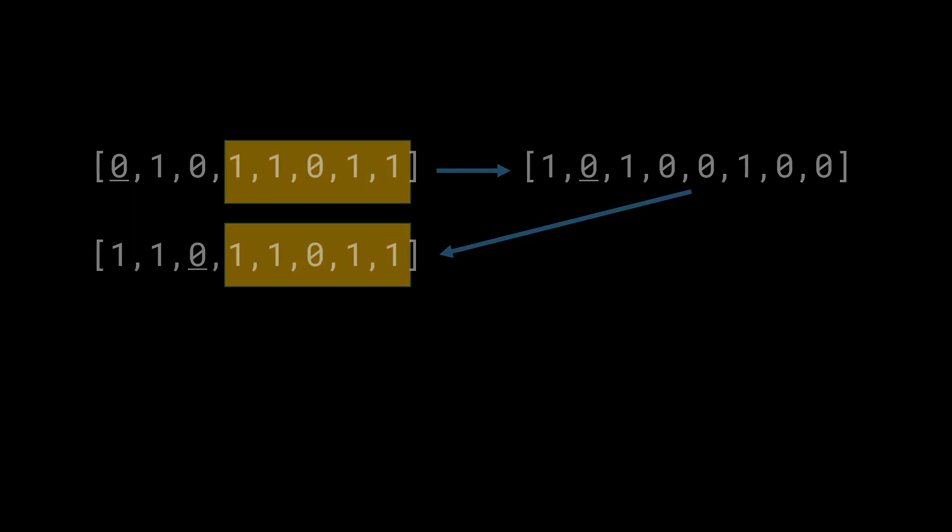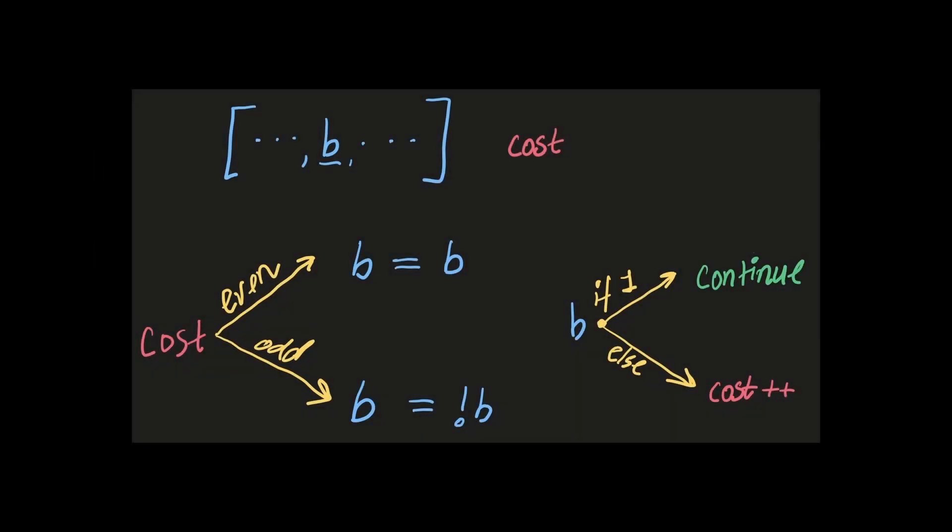Say that we are looking at an array and we are looking at a random bit in the array, somewhere in the middle. At this point, let's say that the cost is some cost variable that we have stored over here represented in red. Now, we'll ask the question, hey, is the cost even or odd? Is the number of flips we have done even or odd?